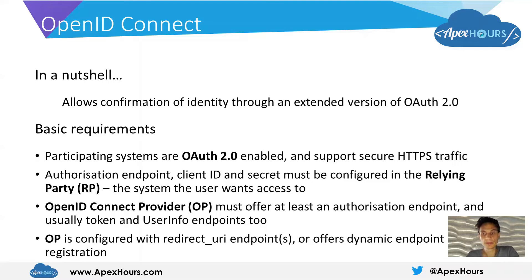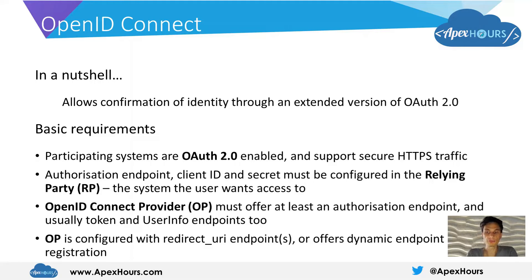These can either be configured up front, or there are also mechanisms within OpenID Connect to enable dynamic registration. On the OpenID Connect provider there needs to be an authorization endpoint, and generally with most versions of this flow there's a token endpoint and also a user info endpoint. It is possible to support OpenID Connect with just an authorization endpoint using the user-agent implicit grant version of OAuth.